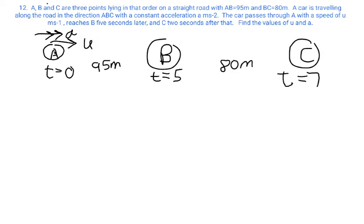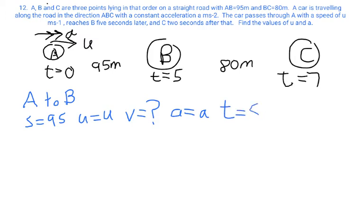So the first thing we're going to look at is the journey from A to B. What do we know from A to B? We know that the distance is 95. We know the initial velocity, U, is U. We know that V, the final velocity, well, we don't know that. We know the acceleration, sort of. It's A. And the time is five seconds to get from A to B. Time equals five.